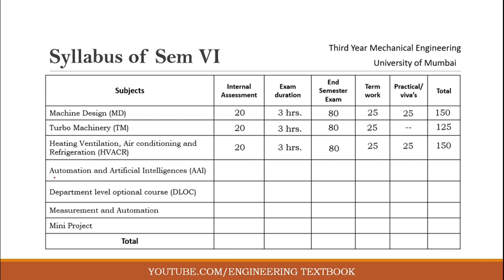Our next subject is Automation and Artificial Intelligence (AAI). It also consists of 20 marks internal assessment, 3 hours exam duration, and 80 marks end semester examination — the theory paper. Therefore the total marks we get for AAI is 100 marks.